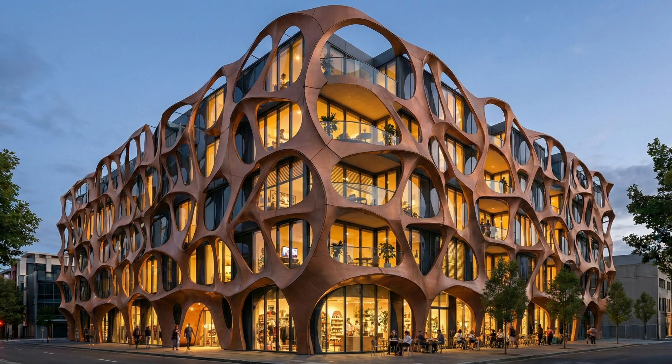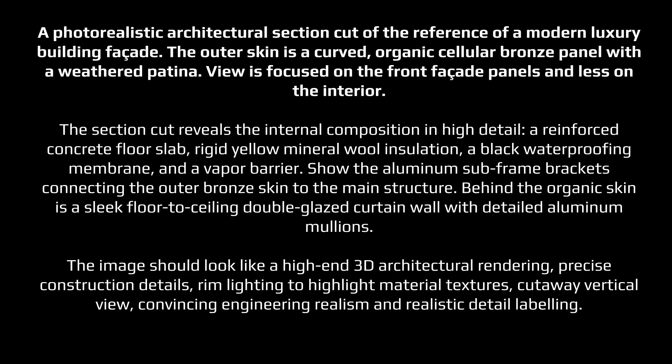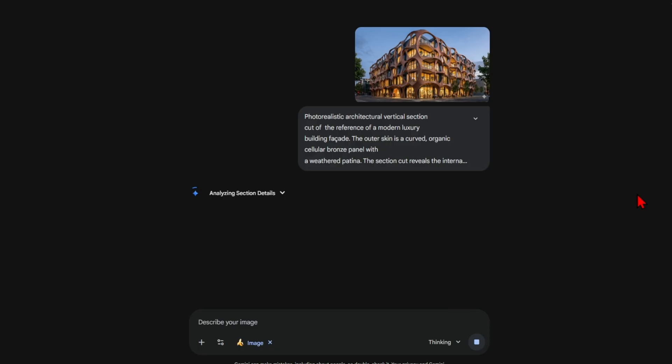Details and sectional diagrams are a powerful way to show how your building actually works. If you want a photorealistic vertical cut highlighting things like insulation, mounting, and layers, be specific about what materials and components you want to see. For example, you might list bronze panels, insulation, and concrete slabs. You know your design best, so don't hesitate to add these into Gemini's prompt to break down the images and suggest how to fit the elements together. Here's the prompt I used.